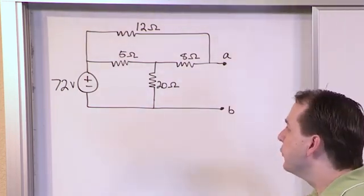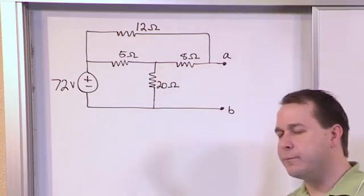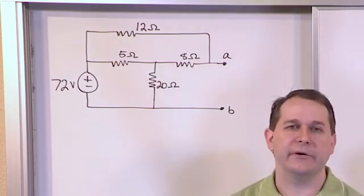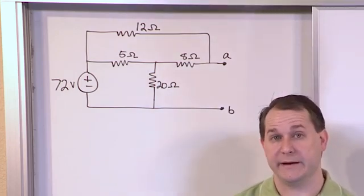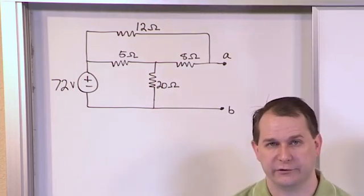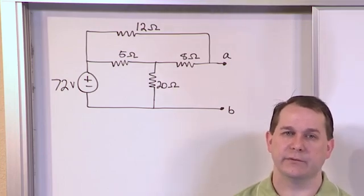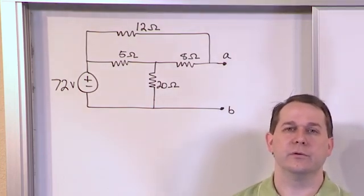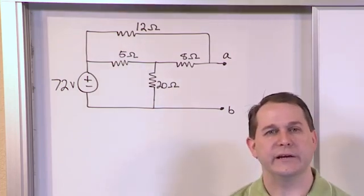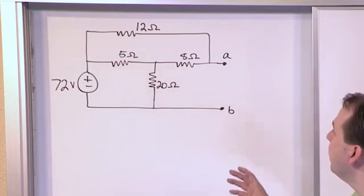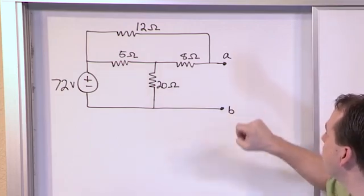Alright, so the first thing, we've erased the board already, but Thevenin equivalent in theory is easy. All you need to do is find an open circuit voltage between A and B. Open circuit voltage. That's the Thevenin equivalent voltage. And then we have the rules to find out what the Thevenin equivalent resistance is. But let's go ahead and tackle the Thevenin equivalent voltage. How do you think we can find the open circuit voltage?